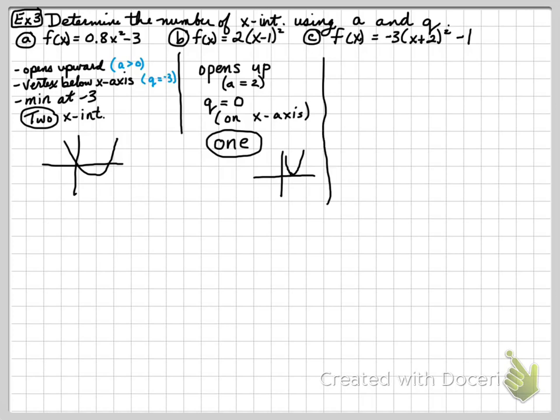That's what it's going to look like. And C, we have, this time, A is going to be a negative 3. That means it opens downward. The maximum now is going to be a negative 1. Therefore, there's going to be 0 x intercepts.